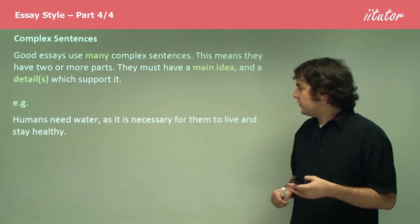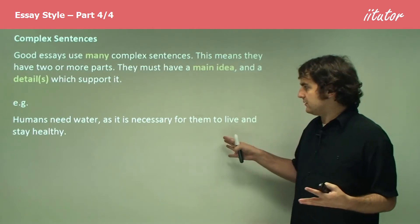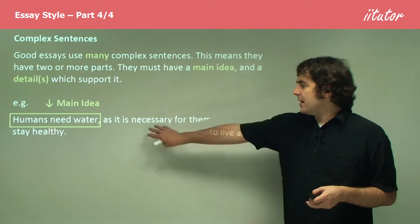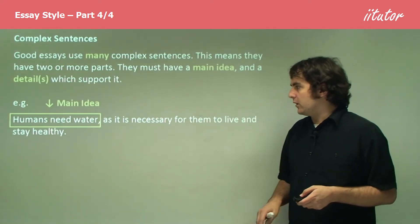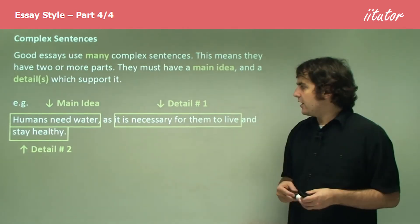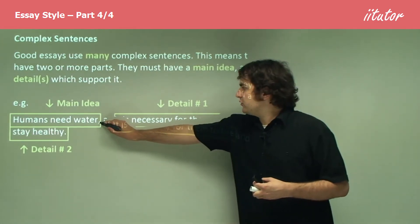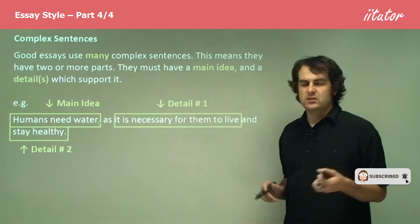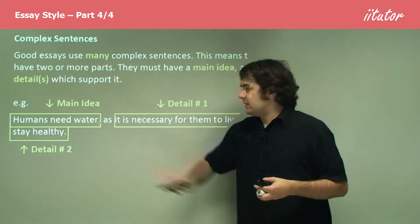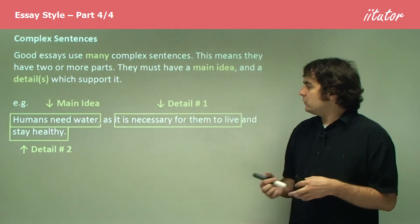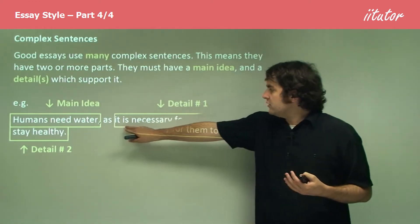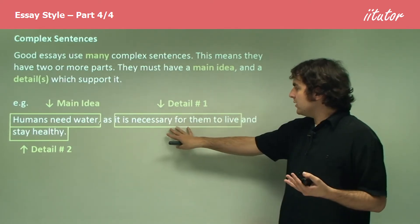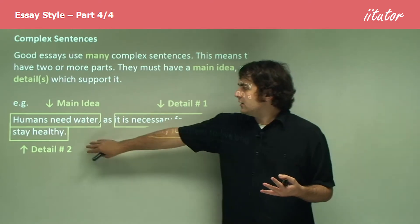Humans need water as it is necessary for them to live and stay healthy. That's our example of a complex sentence. We have a main idea — humans need water — and we have two details: it is necessary for them to live, and stay healthy. The main idea can stand alone as a full sentence, while the details require it to continue working. So you should be stating a fact and then using your sentence to explain why it's true — humans need water, because it's necessary for people to live and it helps people to stay healthy.